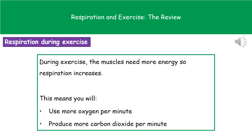If we consider what actually happens when we exercise: during exercise, our muscles are going to need more energy in order to carry out more contractions. If they need more energy, respiration has to increase. For respiration to increase, we're obviously going to need more oxygen, because we're going to be using more oxygen every minute, which means we'll also be producing more carbon dioxide every minute.